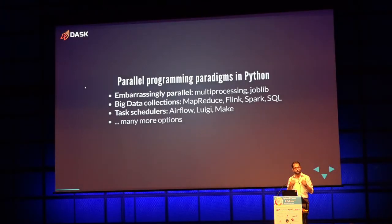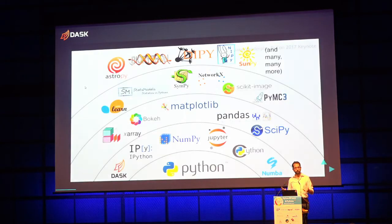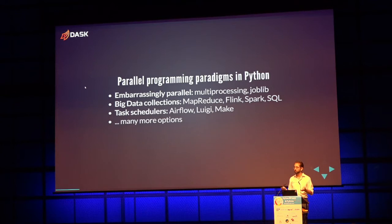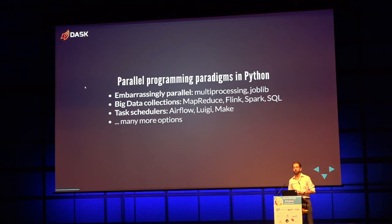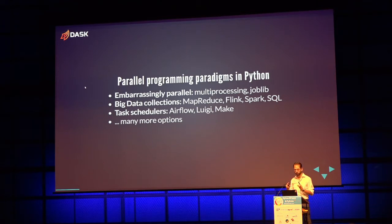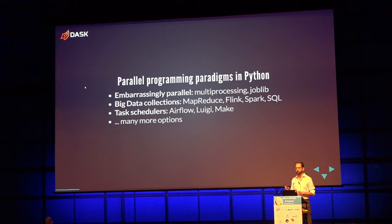Let's look at common solutions for parallelism today. Who has used multiprocessing? Almost all hands. Who has used MapReduce, Flink, Spark, or large parallel SQL databases? Many hands, not quite as many. How about a task scheduler — Airflow, Celery? Fewer hands. These are all relatively different classes of projects offering different APIs and different performance guarantees.